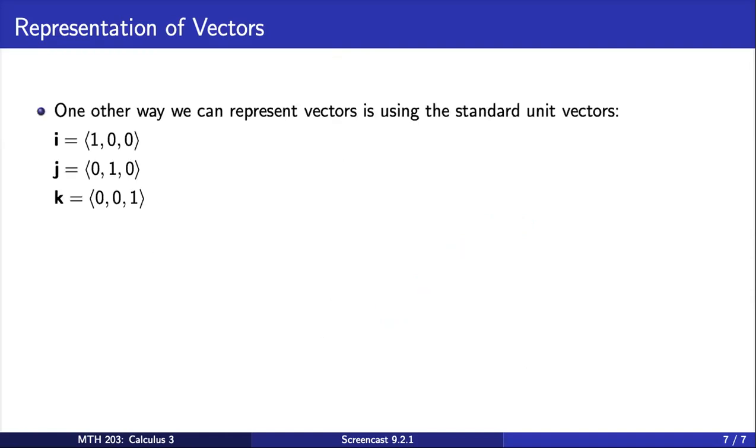One other way that we can represent vectors is using the standard unit vectors, which are important vectors in the physical sciences. Each of these vectors represents a one unit change in a specific direction. The vector i represents a one unit change in the x direction, the vector j in the y direction, and the vector k in the z direction.